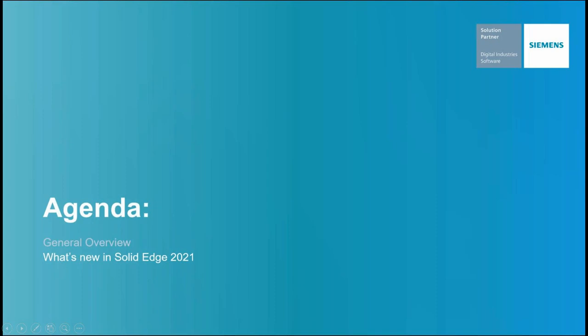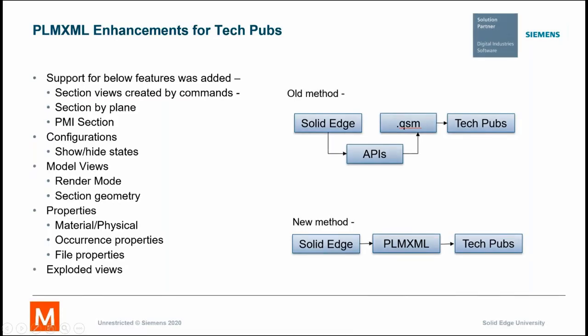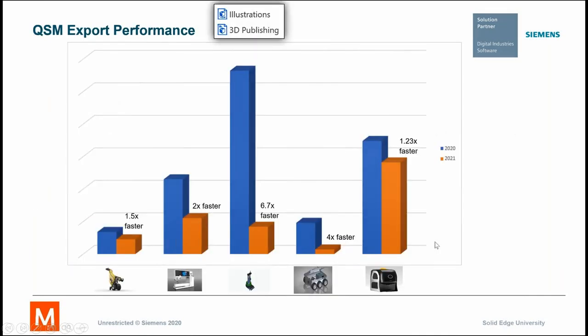These are now specific to what is new in Solid Edge 2021. We've changed the method in which we get the Solid Edge models into TechPubs. In the past we used an API to grind the Solid Edge models into the QSM file. Now we do it via the PLM XML pipeline, and that carries a lot more information with it — like exploded views and some occurrence properties from your assemblies or the additional properties or metadata. But what this boils down to is simply faster.